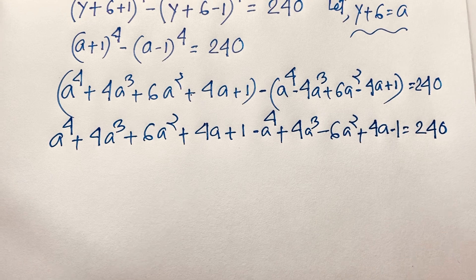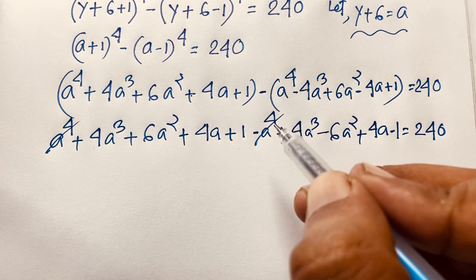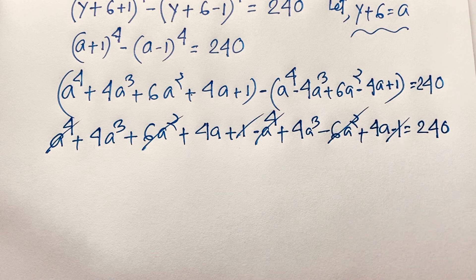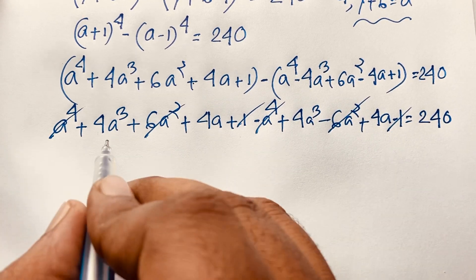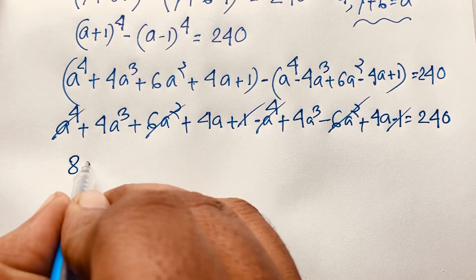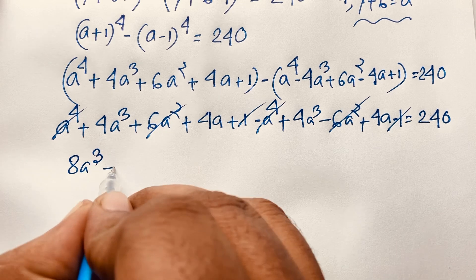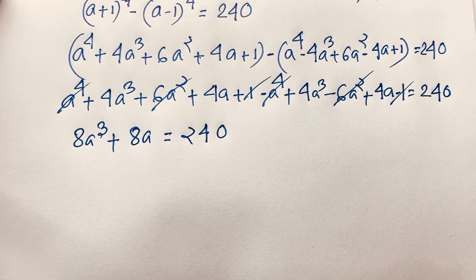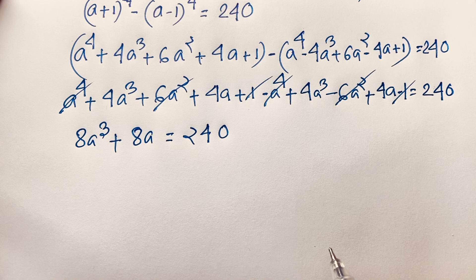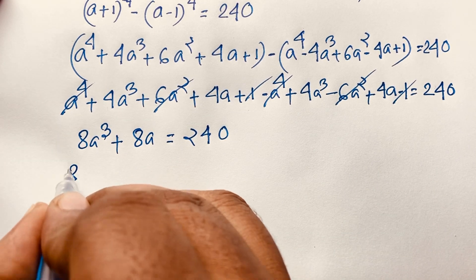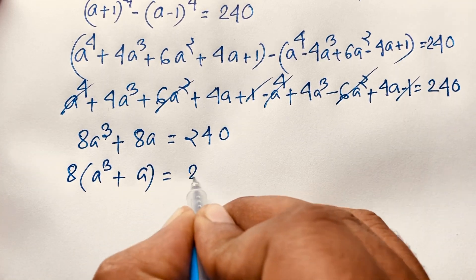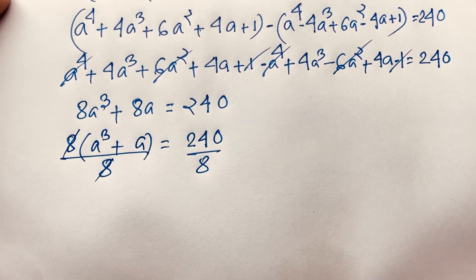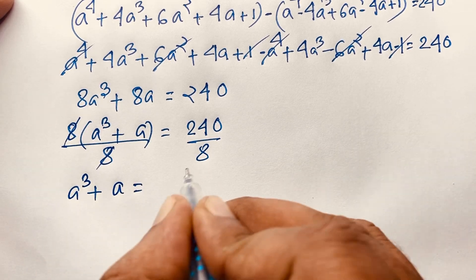After cancellation: a^4 cancels, 6a^2 cancels, and the 1s cancel. We are left with 4a^3 + 4a^3 = 8a^3, and 4a + 4a = 8a. So 8a^3 + 8a = 240. Dividing both sides by 8 gives a^3 + a = 30.